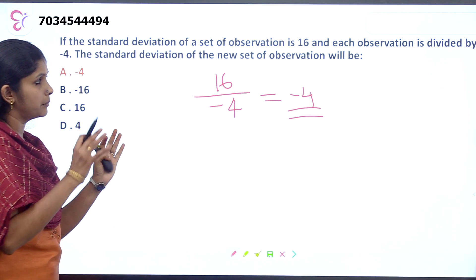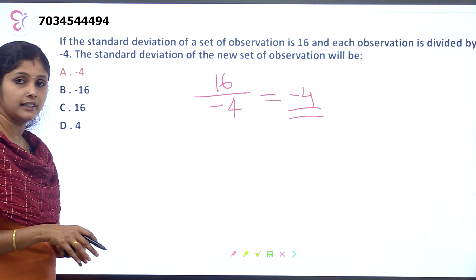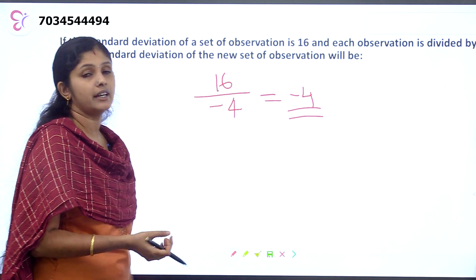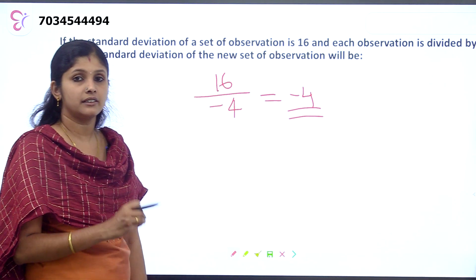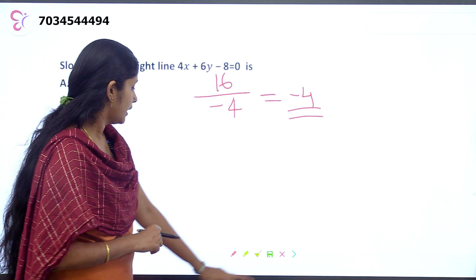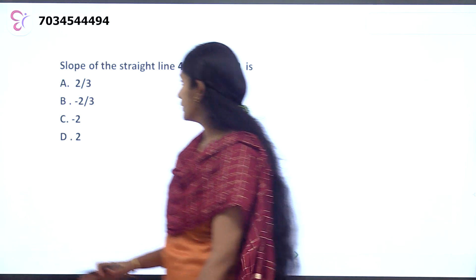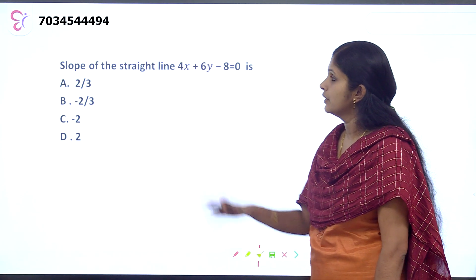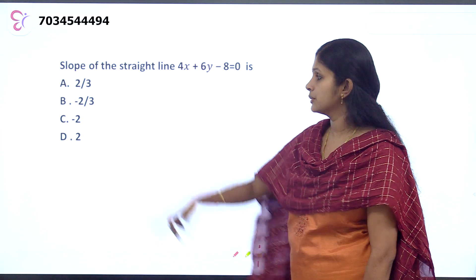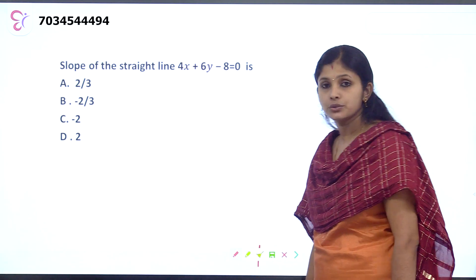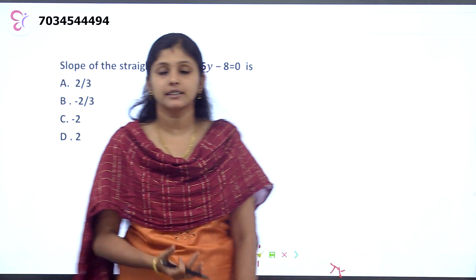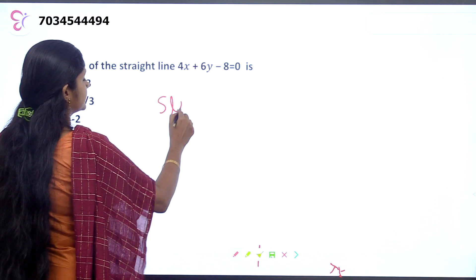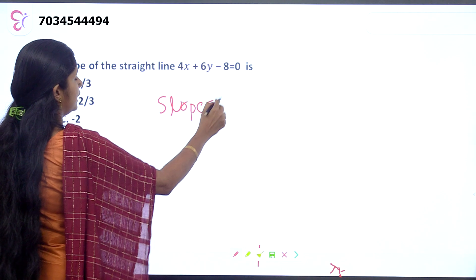When we divide each number in the data by a constant, the standard deviation is also divided by that same number. We divide the spread accordingly. Now the next question: find the slope of the straight line 4x plus 6y minus 8 equals 0.